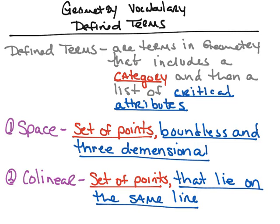We're going to continue looking at vocabulary and geometry. However, this time we're going to be looking at some defined terms. A defined term includes a category, but also has a list of critical attributes. They have to have these two things in order to be a defined term — a category and a list of critical attributes. So I've got two examples here.